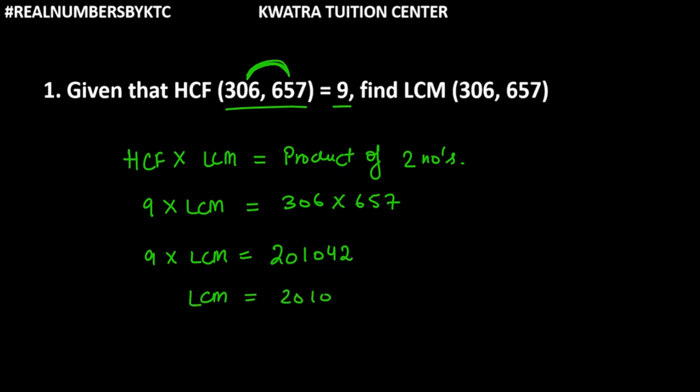And when you divide 201042 with 9, you will get the final answer or the LCM as 22,338. So this is how you can find if HCF is given or two numbers are given, you have to remember this formula to find the answer. So this is how you can solve question number 1.